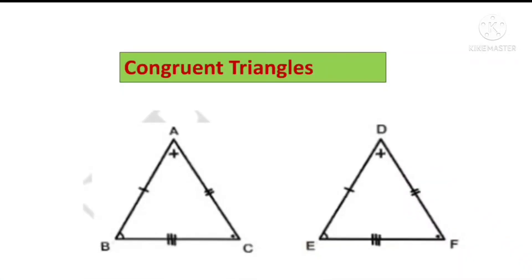Congruent triangles: what is meant by congruent triangles? In two triangles, if corresponding sides and corresponding angles are congruent, then the two triangles are congruent. Triangle ABC is congruent to triangle DEF when angle A ≅ angle D, angle B ≅ angle E, angle C ≅ angle F, and side AB ≅ side DE, side BC ≅ side EF, and side AC ≅ side DF. Therefore, triangle ABC ≅ triangle DEF.